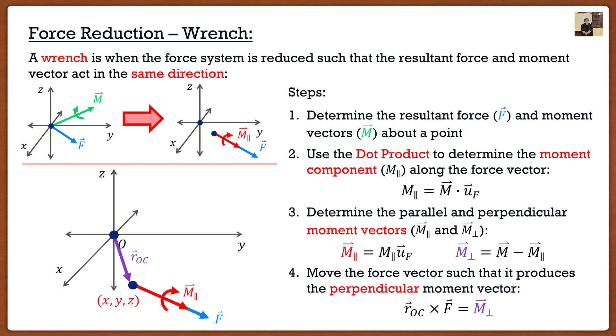So we're going to do exactly what we did in the previous video but in this particular case we just want to move it so that the perpendicular component disappears. And we do that through the cross product. In this case if we have a position vector from O to our new point crossed with our force vector we want that to be equal to the perpendicular component. So here's the key here that distinguishes this from the previous video.